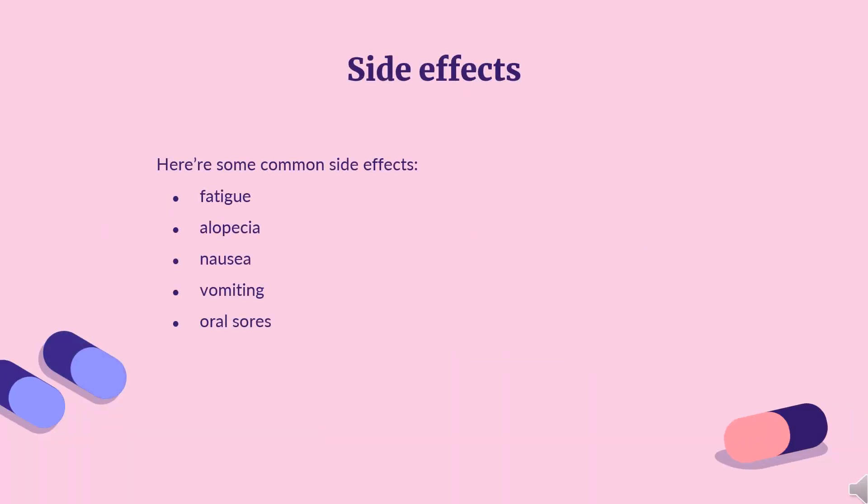Side Effects: Adverse reactions are common after doxorubicin administration, including fatigue, alopecia, nausea and vomiting, and oral sores. Bone marrow suppression and an increased risk of secondary malignancy diagnosis may also occur.